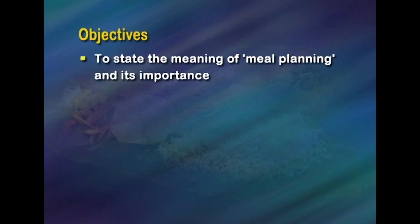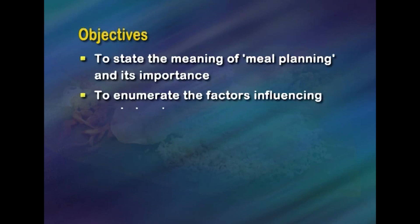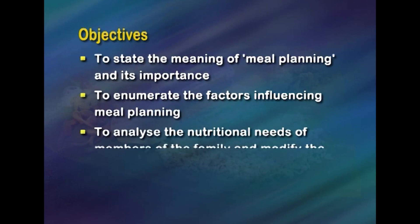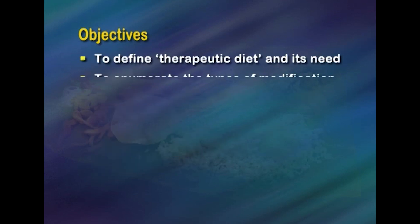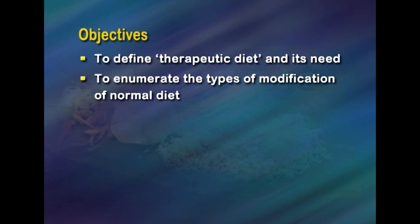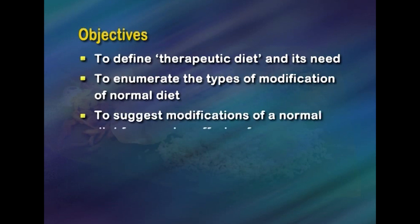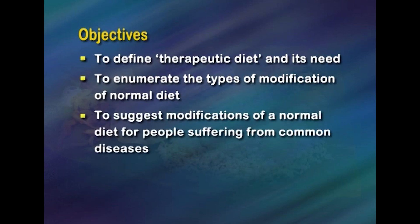The objectives of this lesson on meal planning will be to state the meaning of meal planning and its importance, to enumerate the factors influencing meal planning, analyze the nutritional needs of members of a family and modify the meals accordingly, define therapeutic diet and its need, enumerate the types of modification of normal diet, and suggest modifications of a normal diet for people suffering from common diseases.